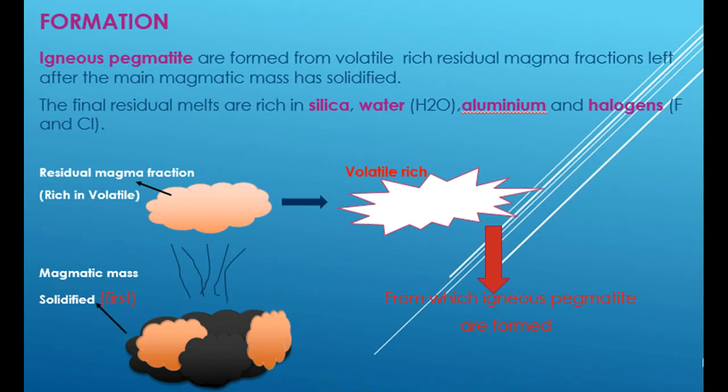Igneous pegmatites are formed from volatile-rich residual magma fractions left after the main magmatic mass has solidified. These rocks have a coarse texture which ranges from greater than 2.5 cm. Also, these rocks are found in deep-seated, high-pressure environments and usually they occur in larger amounts than metamorphic pegmatites.